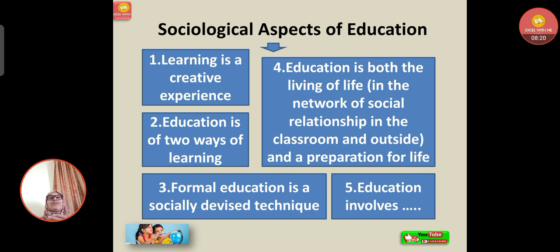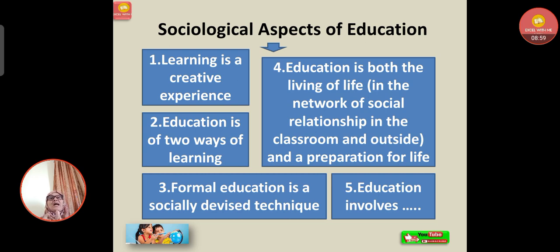Education is both the living of life in the network of social relationships in the classroom and outside, and the preparation for life. Preparation for life involves the capacity to earn a livelihood, the capacity to enrich one's life through enjoyment of the cultural heritage and one's inner resources, and the capacity to function efficiently and constructively as a member of society and as a citizen of the state. Lastly, the fifth aspect: education involves mastery of the tools of learning such as reading, writing, and arithmetic, and mastery of our relations to our inner self, to our neighbor, and to the universe. These are the social aspects of education.